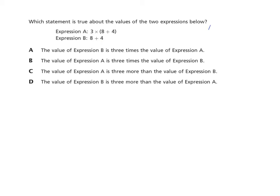Expression A is three times the sum of eight plus four. We'll simplify the expression in the parentheses — the part in parentheses must be solved first. So three times the quantity eight plus four: eight plus four is twelve, and three times twelve equals thirty-six. And of course, expression B, eight plus four, is simply twelve.